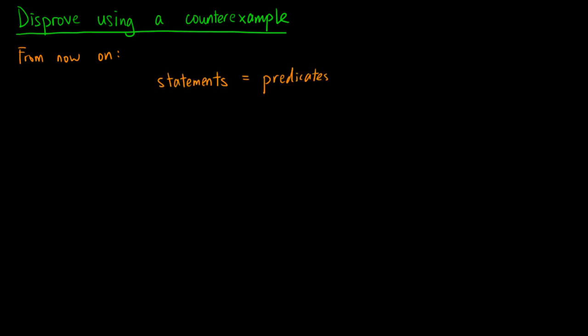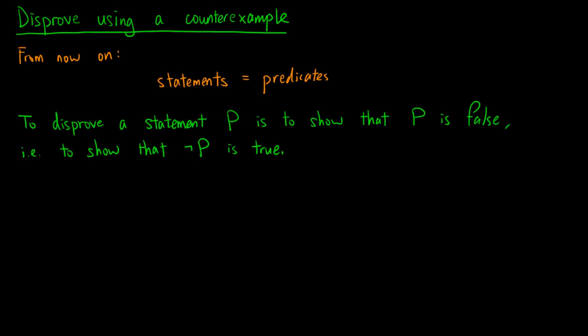Before talking about how to prove a statement, let's see how we can disprove a special kind of statements first. Just so we're clear about the definition, to disprove a statement P is to show that P is false, that is, to show that not P is true.